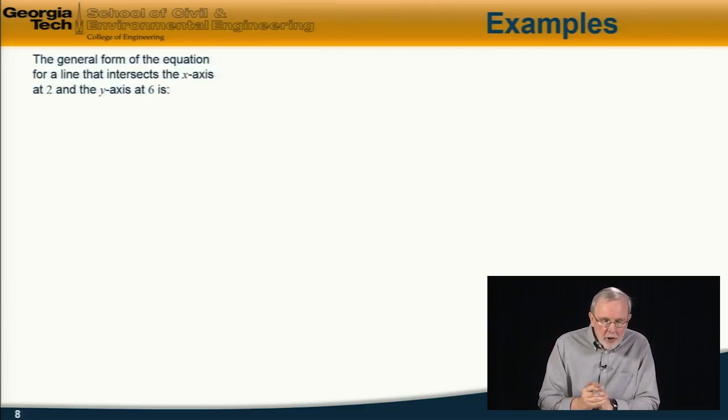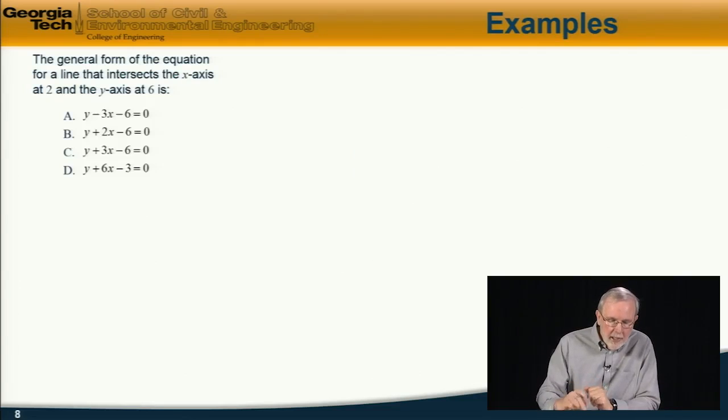Last example: the general form of the equation for a line that intersects the x-axis at 2 and the y-axis at 6 is which of these?